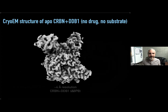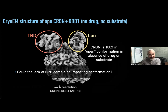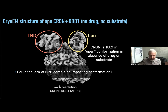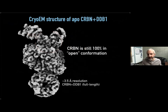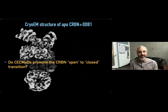For the first time, we're able to solve the structure of the resting state of cereblon-DDB1. Randy was able to get a nice reconstruction, and we can see that 100% of the cereblon is in this open state where the thalidomide-binding domain and the LON domain are completely separated — we saw no indication that there was a closure of these two domains. We then confirmed this held for the full DDB1 complex with all three domains. So the next question was: do CELMoDs — these small molecules — promote this open-to-closed transition?